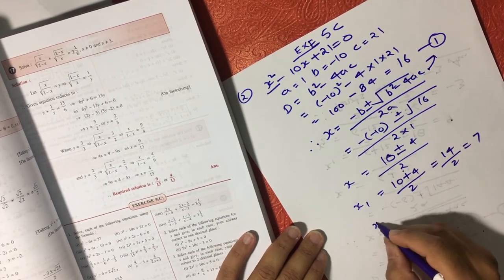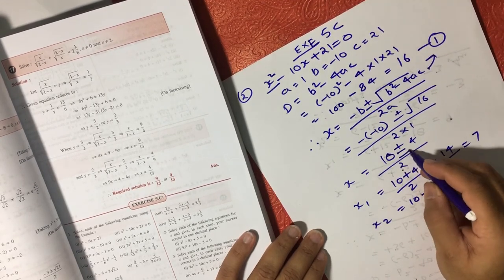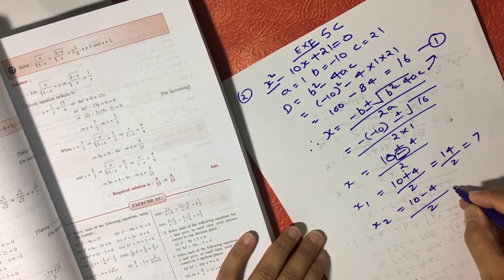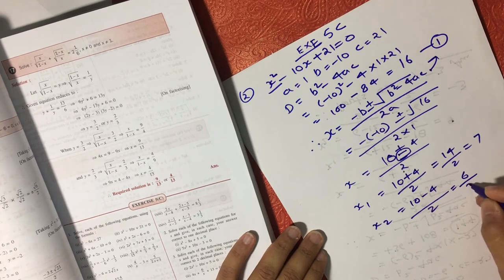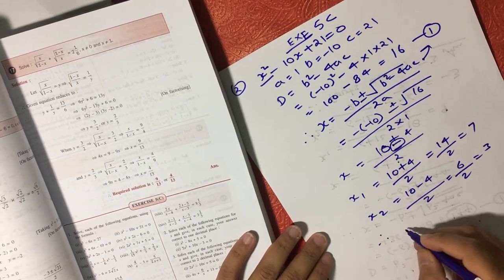And the second value will be if I consider the negative value here, then it will come (10 - 4) / 2 = 6 / 2 = 3.